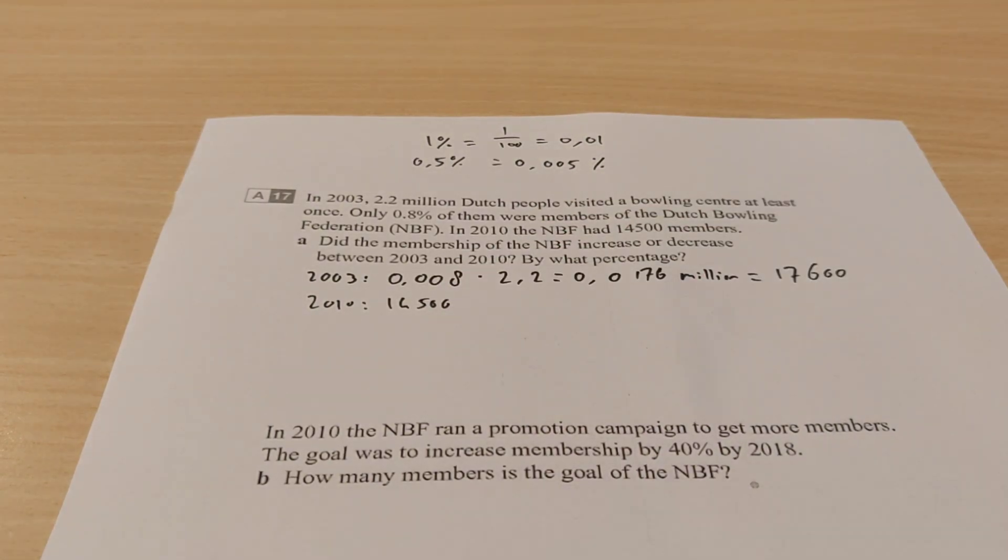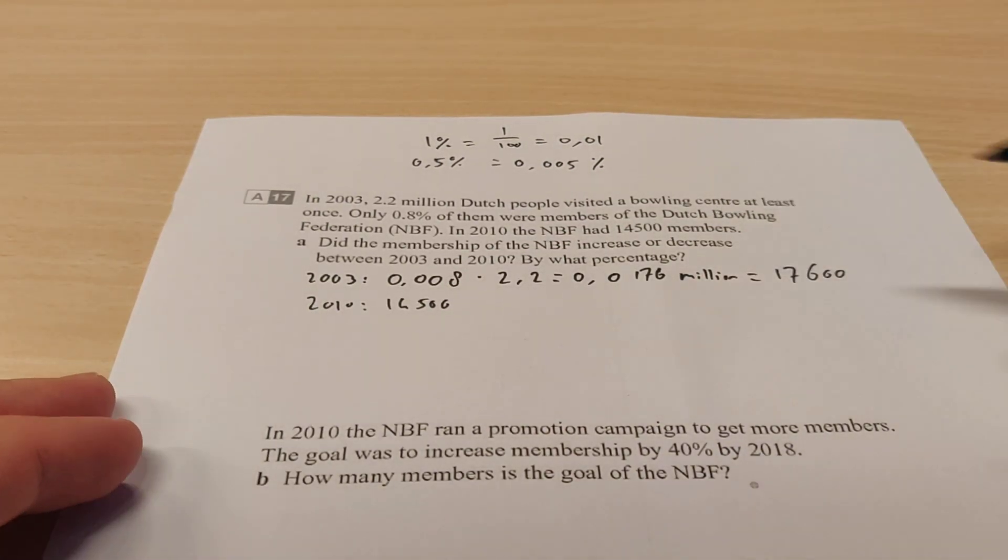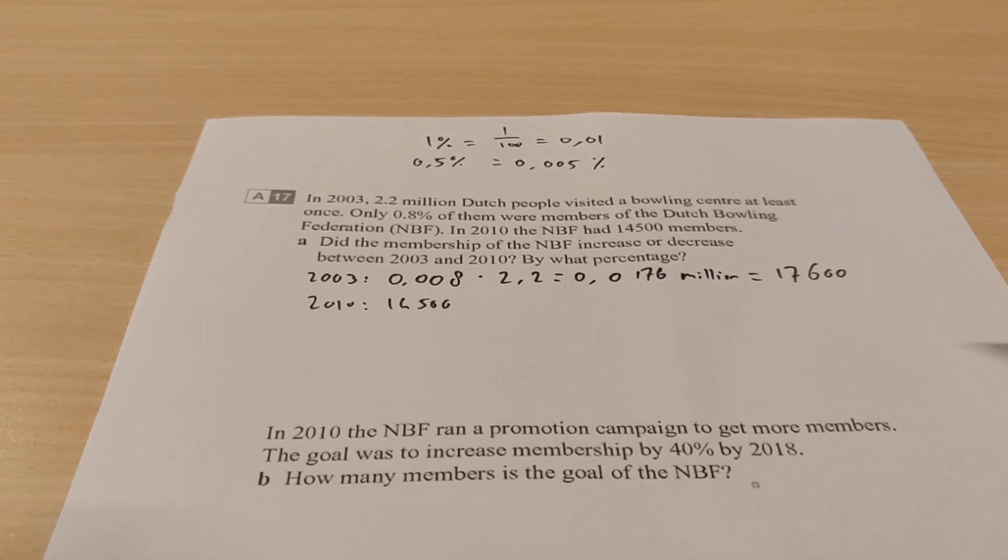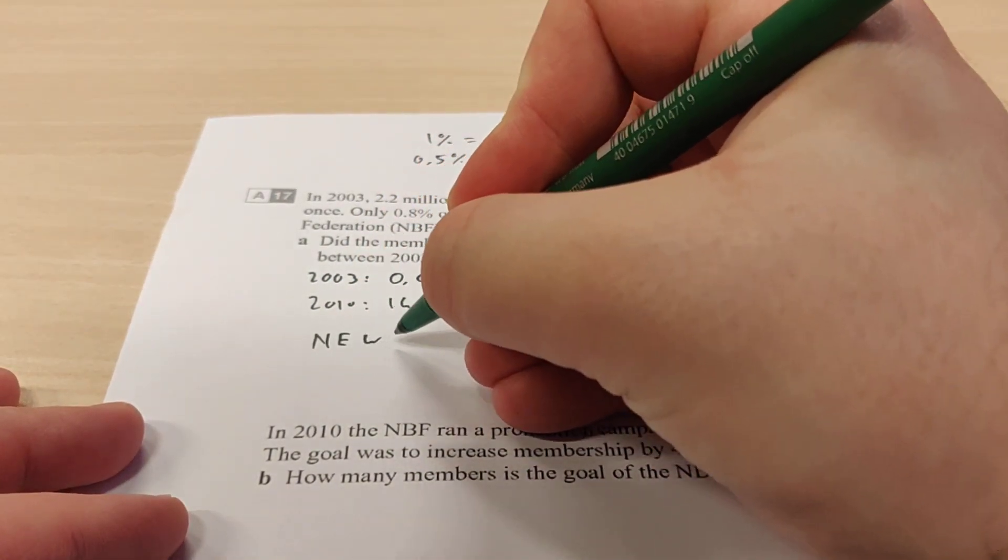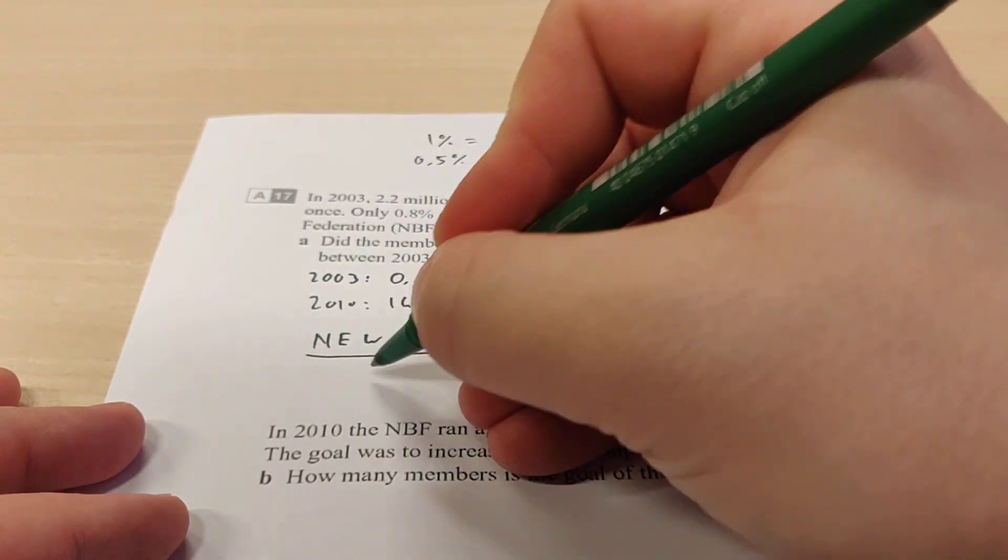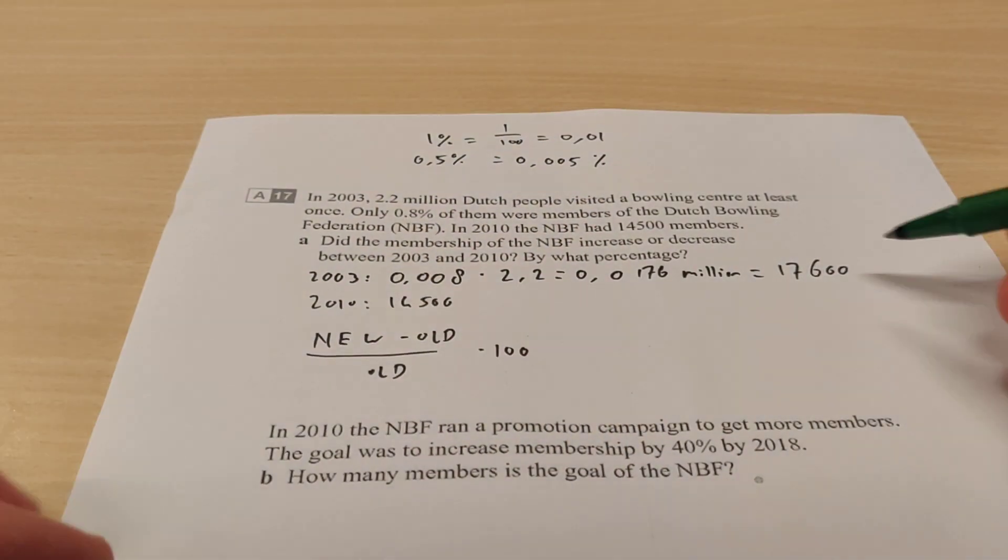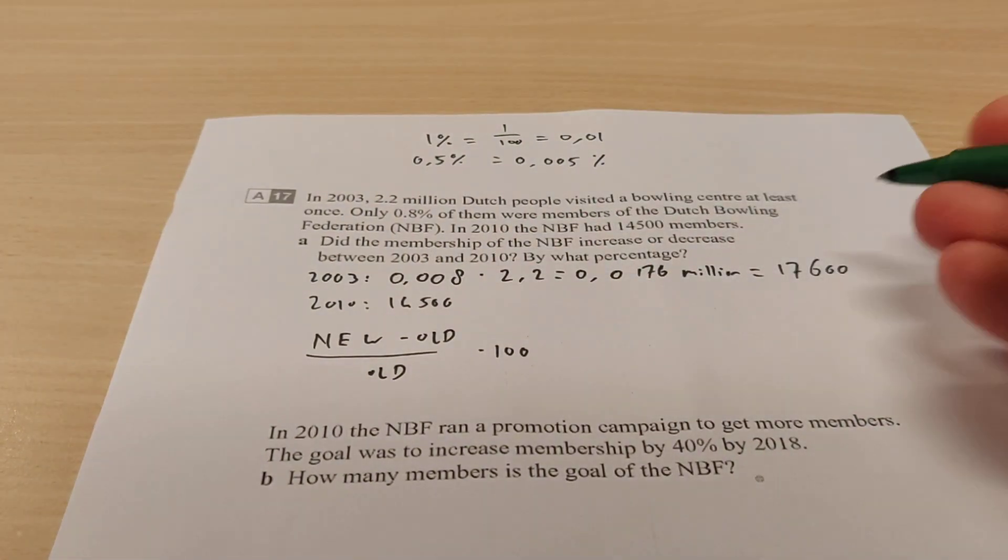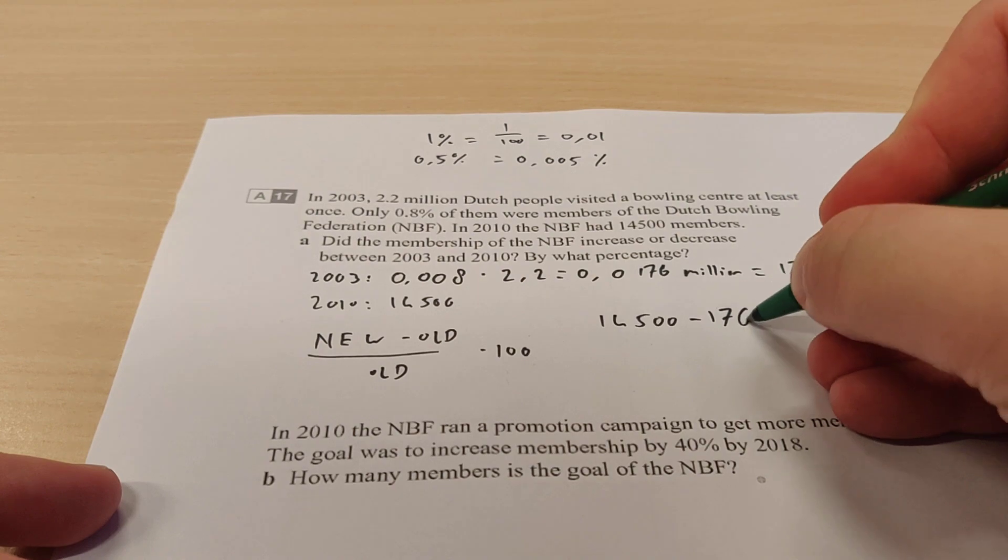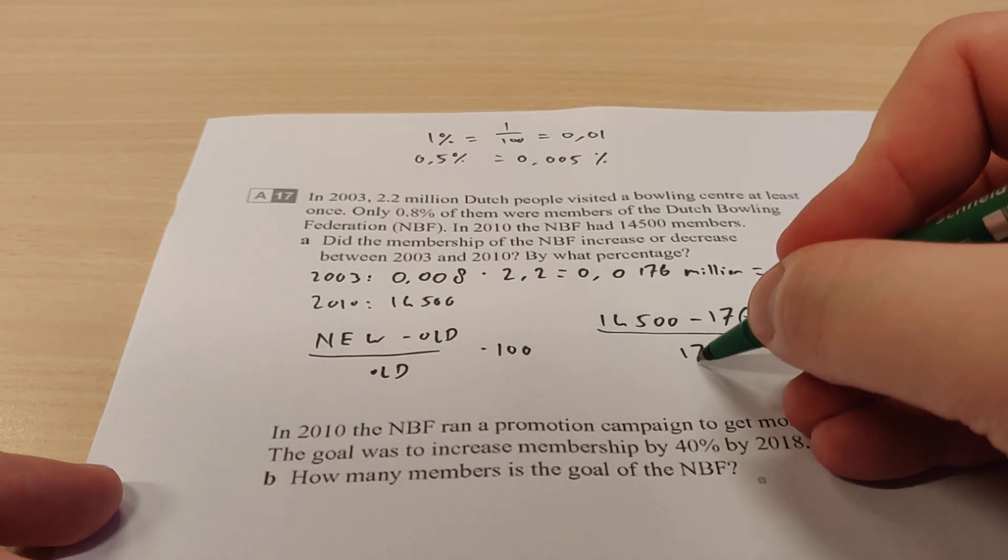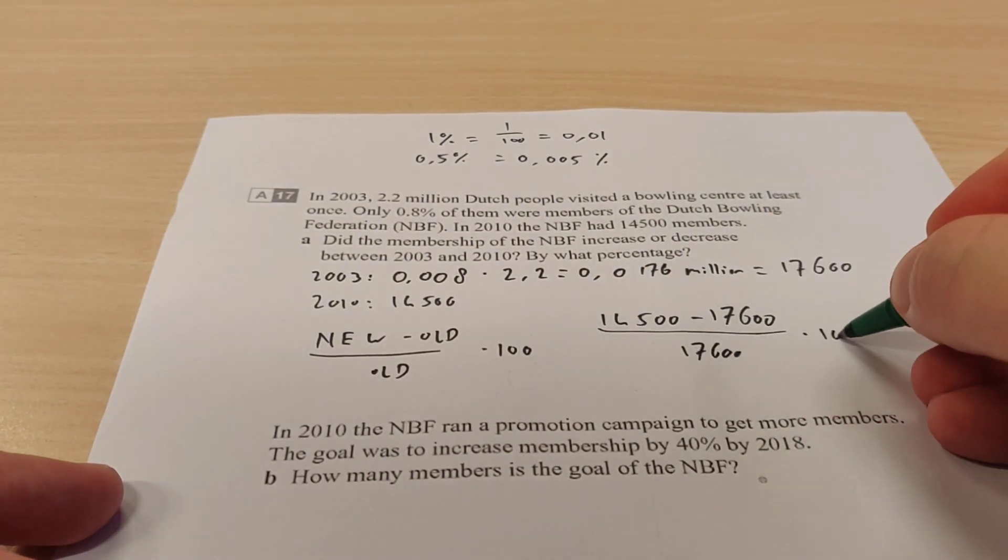And the question is, by what percentage? So here we have the rule that I explained in my previous video. The rule to calculate this is new minus old divided by old times 100. So this is the new amount and this is the old amount. So we do 14,500 minus 17,600 divided by 17,600 and then times 100.